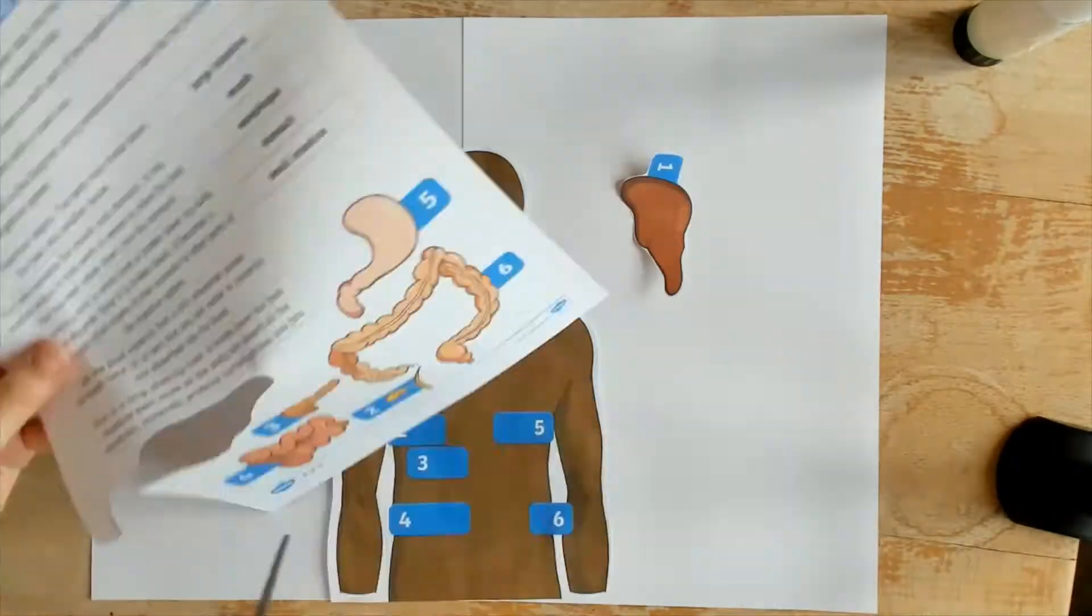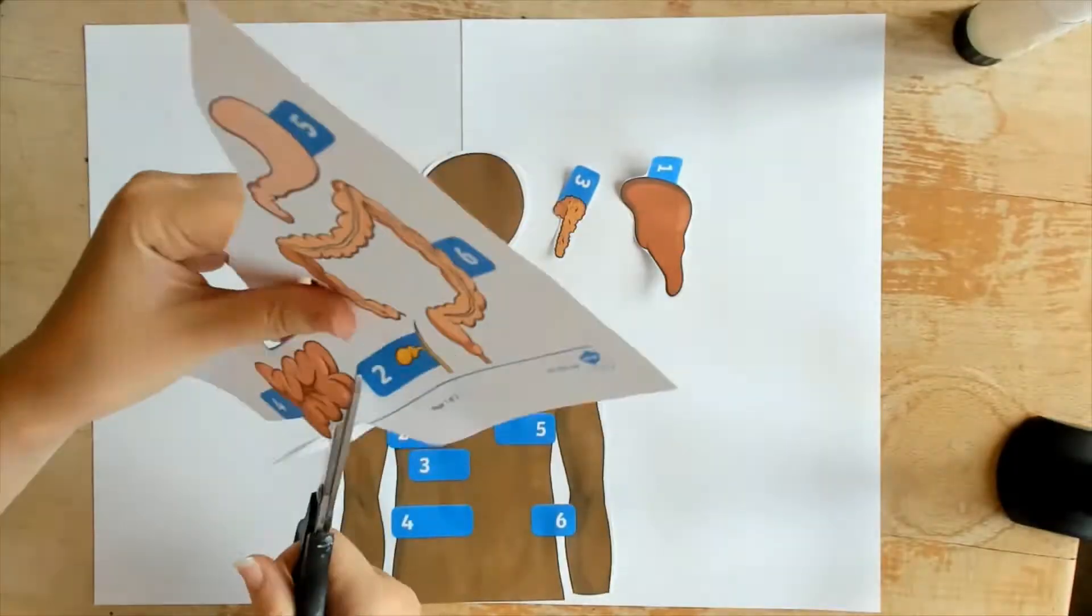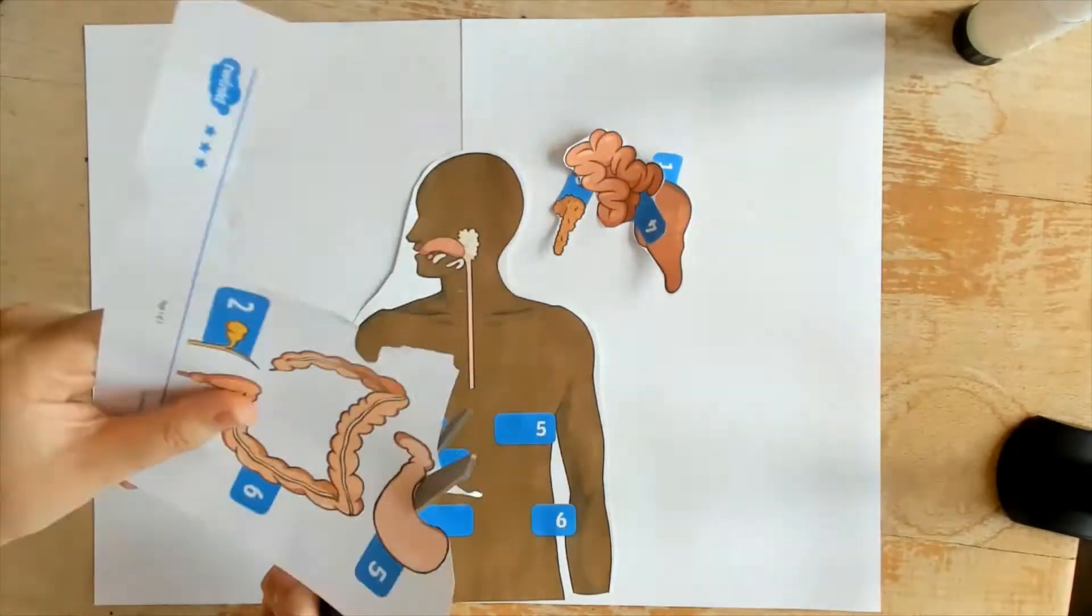Next, learners must cut around the organs and place them on the body outline. The intestine is very fiddly.